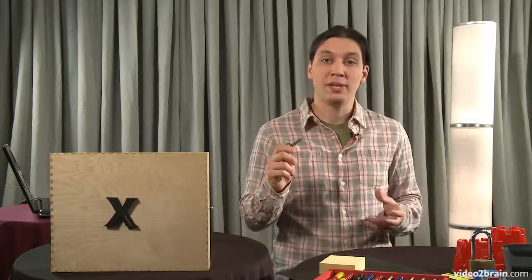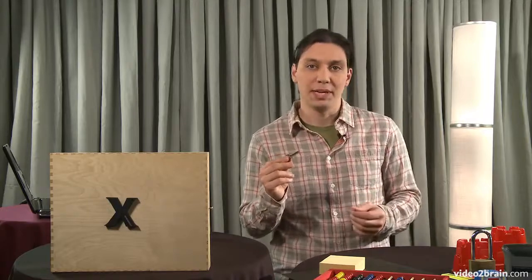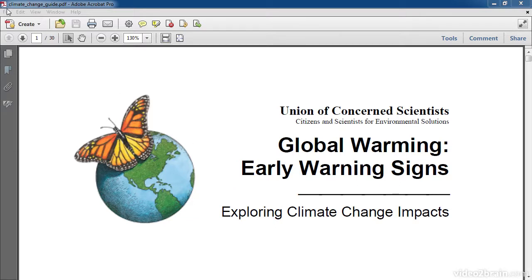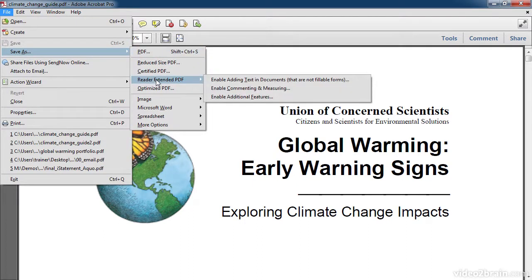Let's take a look at how you can enable a PDF in Acrobat to unlock features in Adobe Reader. To unlock functionality in Adobe Reader, go to File, Save As, and don't just save it as a PDF, but save it as a Reader extended PDF.